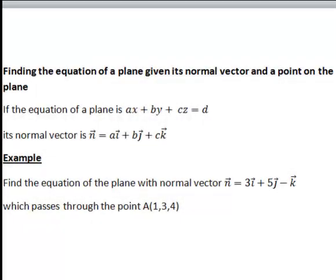In this recording we look at finding the equation of a plane, given we know a normal vector to the plane and a point on the plane. And the general principle is that if the equation of a plane has the form Ax plus By plus Cz equal to a constant D,